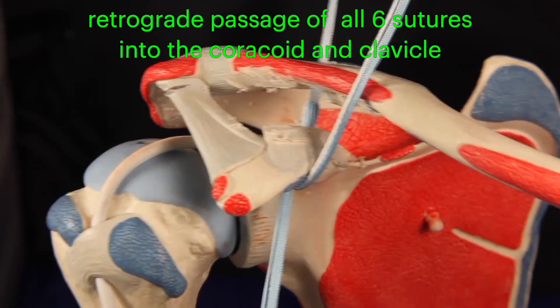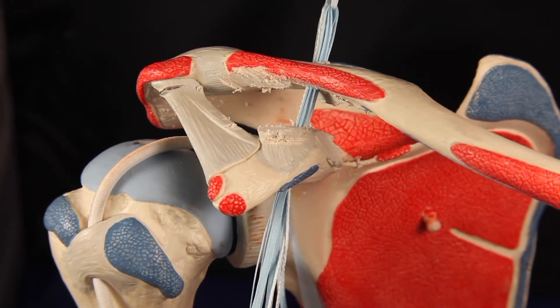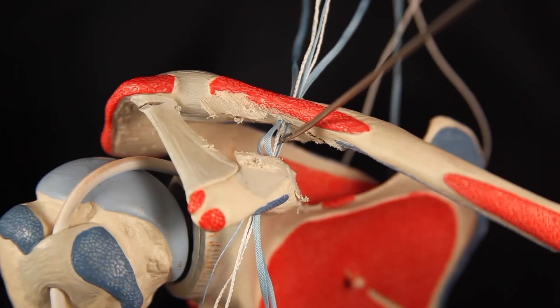All six strands of suture, not including the rescue stitch, are then placed into the passing loop and pulled out of the top side of the clavicle.